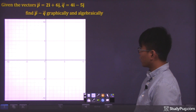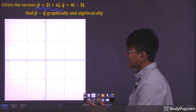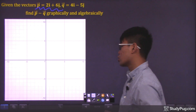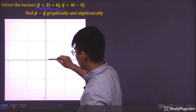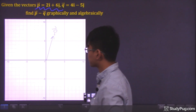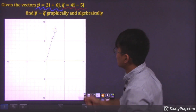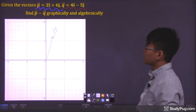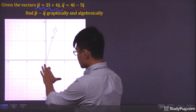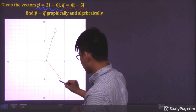Let's quickly plot these vectors. Vector p is in blue — it has an x component of positive 2 and a y component of positive 6, so starting from the origin it points in this direction. Vector q is in red — it has an x component of positive 6 and a y component of negative 5, pointing towards this point here.